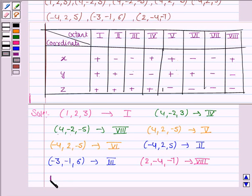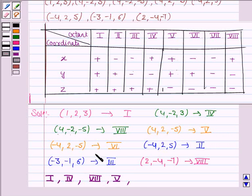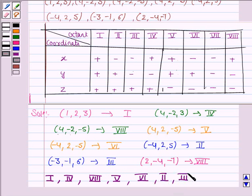Hence, the first point lies in the first octant, the second in the fourth octant, the third in the eighth octant, the fourth in the fifth octant, the fifth in the sixth octant, the sixth in the second octant, the seventh in the third octant, and the last in the eighth octant. This completes the question. Bye for now, take care, have a good day.